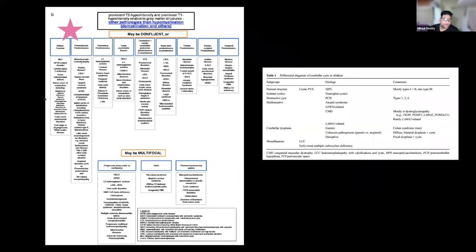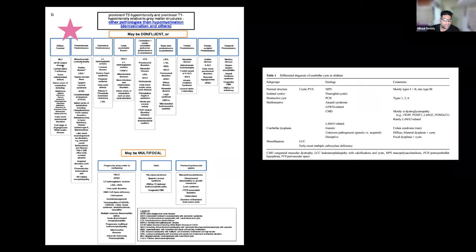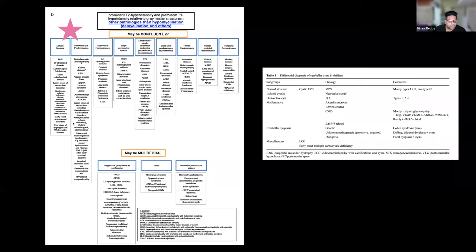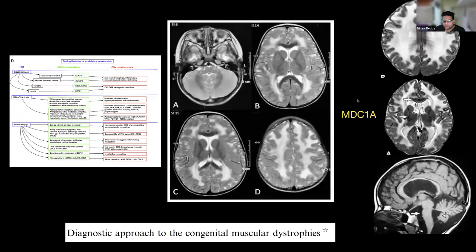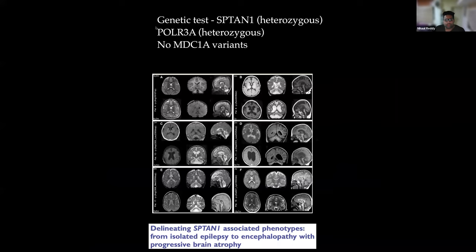Pattern approach for white matter disorders places this under diffuse cerebral or periventricular predominant disorders. Muscular dystrophy is common with this pattern. Peroxisomal disorder is another consideration. MDCA1 was considered with similar white matter changes, possibly associated with cortical malformation. Creatine kinase was elevated though mildly. SP-TAN1 usually presents with diffuse atrophy and epileptic syndrome — doesn't fit the imaging pattern. PAL3 imaging pattern is not typical either.